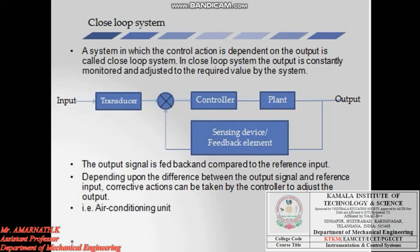In an open loop control system, there is no feedback element. In a closed loop control system, it consists of a feedback element by which the error is detected — finding out the difference between the output and input signals. By calculating this difference between the error signals, it senses the error.